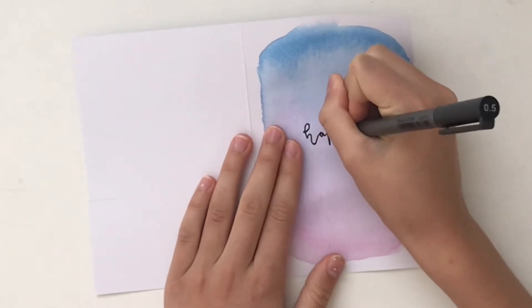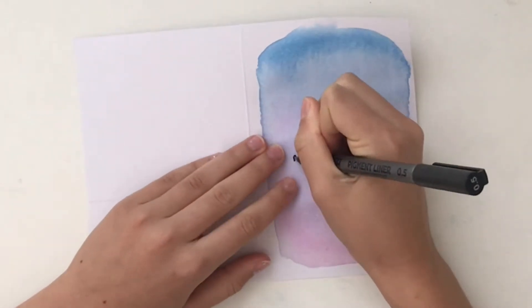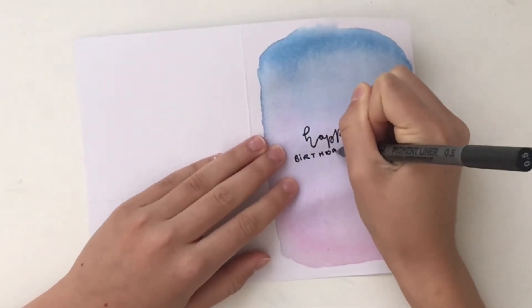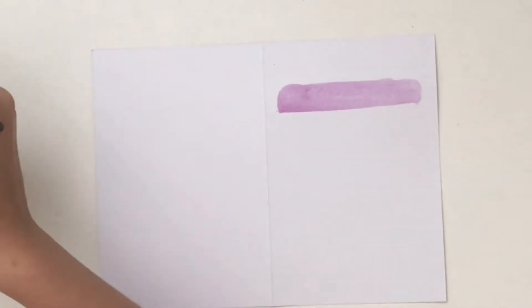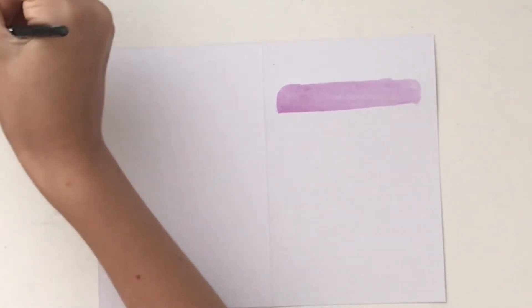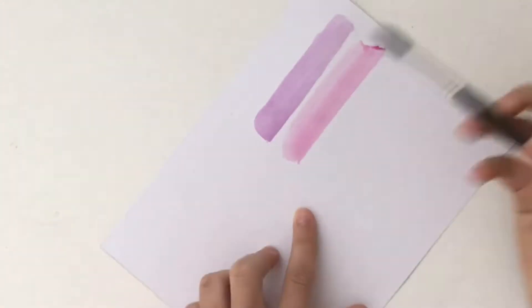So for this card you just do various horizontal lines in different colors, but make sure they aren't touching. You will see what this is going to look like in a second.